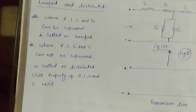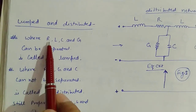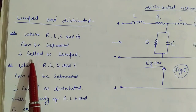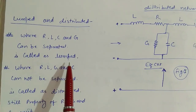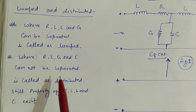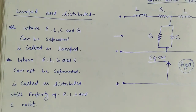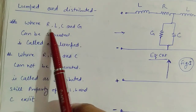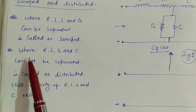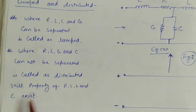Now we are going to discuss the lumped and distributed network. When the primary constants R, L, C, and G can be separated, those elements are called lumped elements. In circuit theory, at low frequencies we can easily separate the resistance, inductance, and capacitance. But when we cannot separate R, L, G, and C, then it is called a distributed element.